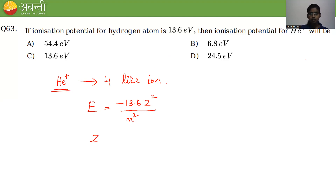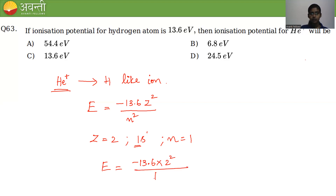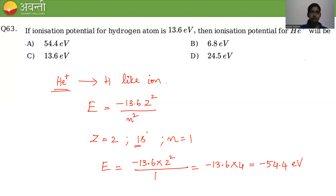For helium, the atomic number Z = 2, and for He⁺ the electronic configuration is 1s¹, so n = 1. Substituting: E = −13.6 × (2²)/1² = −13.6 × 4 = −54.4 eV. So option A is the correct answer.